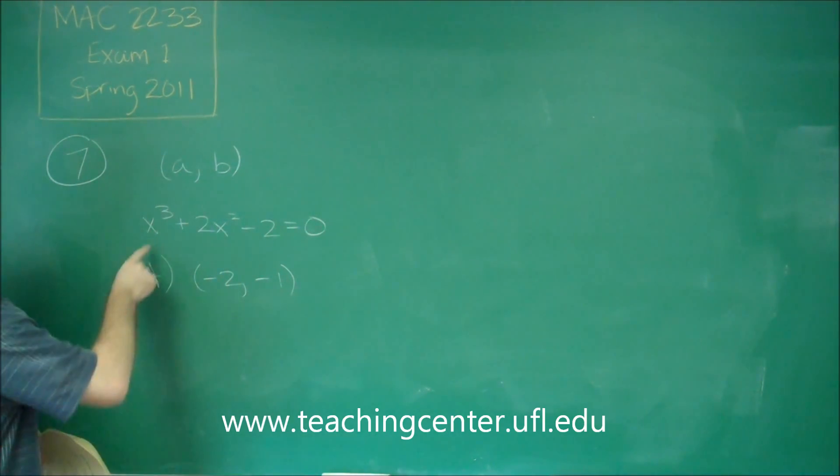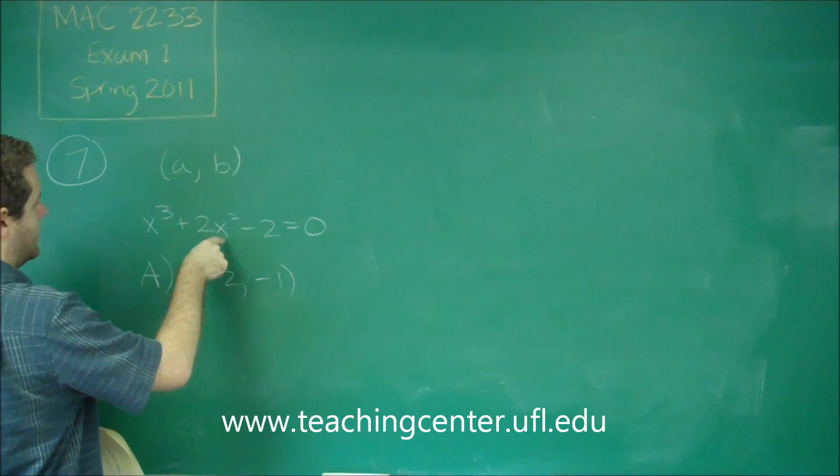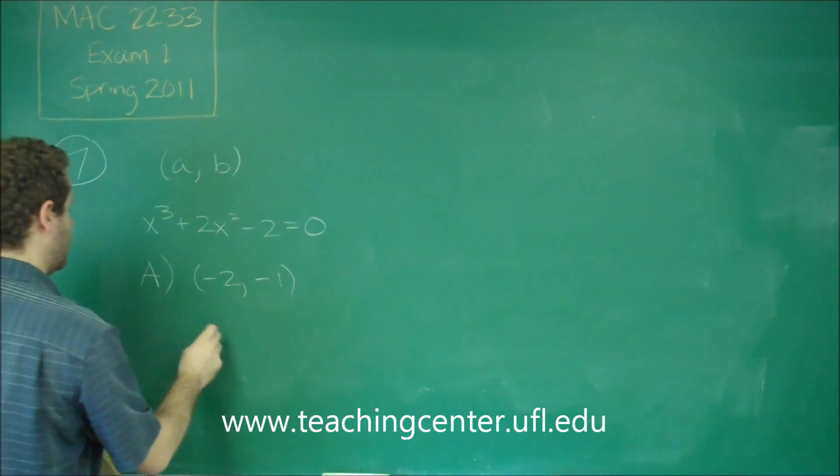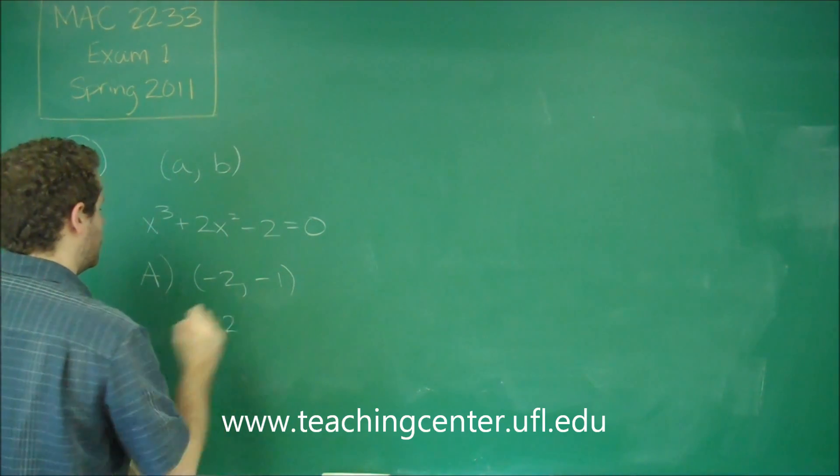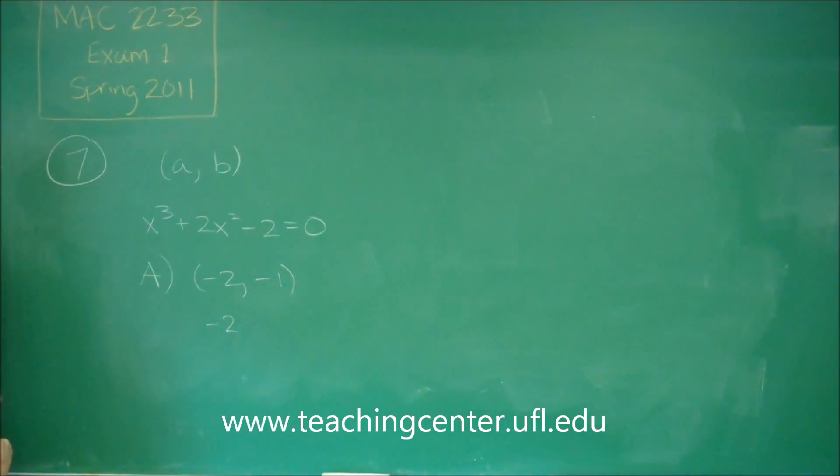So if we plug in negative two, we're going to get negative eight plus eight. So these cancel out, we're just going to get negative two here. And when we plug in negative one, we're going to get negative one plus two, which is one. One minus two, we end up getting negative one as well. That means both of these were negative. This one is not giving us a zero.